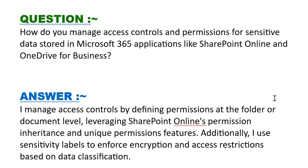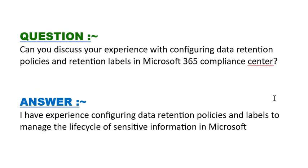Our next question is: how do you manage access controls and permissions for sensitive data stored in Microsoft 365 applications like SharePoint Online and OneDrive for Business? I manage access controls by defining permissions at the folder or document level, leveraging SharePoint Online's permissions inheritance and unique permissions features. Additionally, I use sensitivity labels to enforce encryption and access restrictions based on data classification.